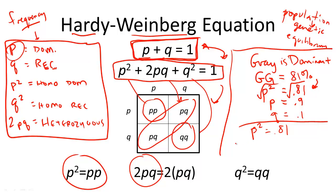So a heterozygous individual is going to be 2 times 0.9 times 0.1, or equal to 0.18. So 2pq is equal to 0.18.